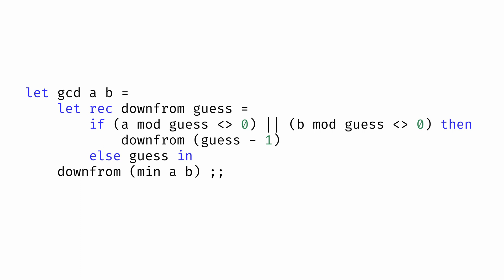The downFrom function takes as its argument a particular guess and checks to see if that guess evenly divides both dimensions. If it does, we return the guess itself, but if it doesn't, we call the downFrom function again on a one smaller guess.